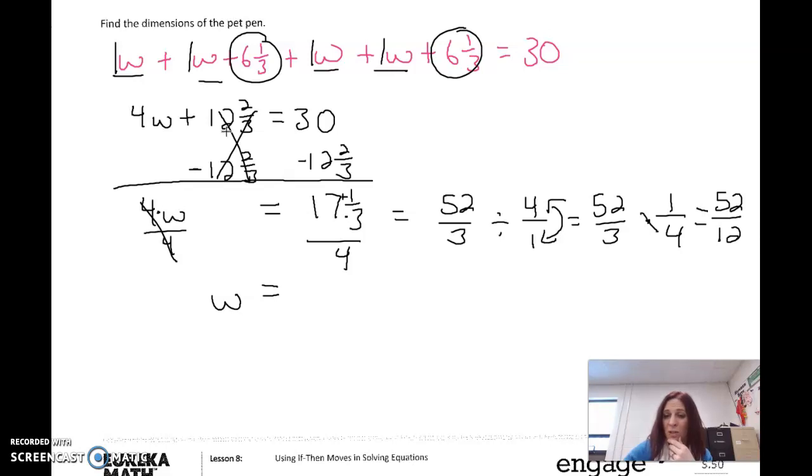And then you can multiply straight across here. You get 52 over 12. If you cross reduce, one and three have a common factor of one. 52 and four, though, have a common factor. Four goes into itself one time. It goes into 52 thirteen times. And you basically get 13 times one, which is 13, over three times one, which is three. So we have 13 thirds, or width is equal to, or three goes into 13 four times, and there's one third left over. So our width is equal to four and a third.